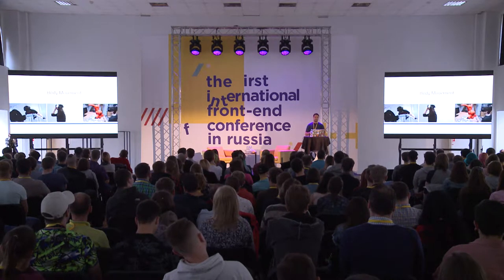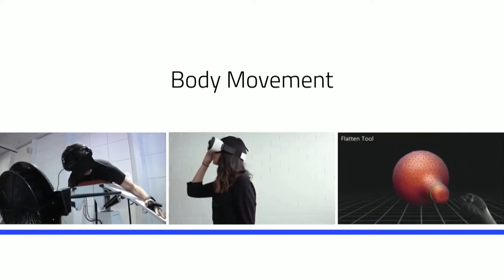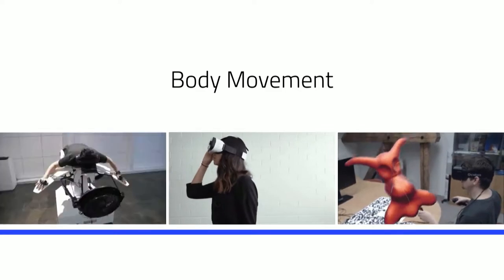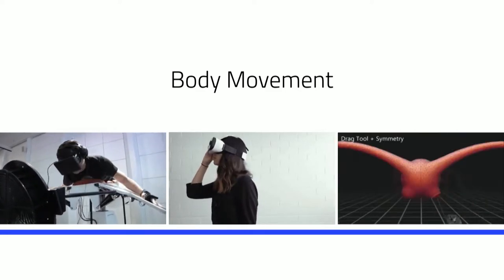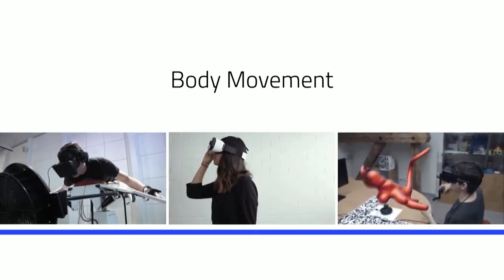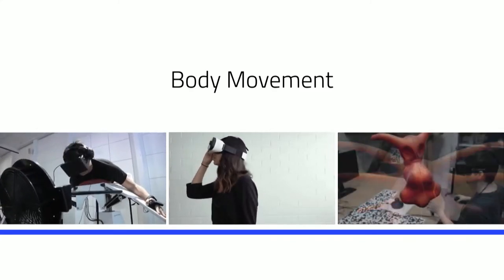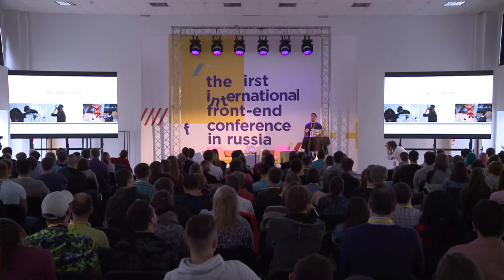Besides stereoscopic imaging, the second thing we need to complete the illusion of virtual space is to track the movement of our body. All VR devices track head movement so we can look around. Some devices — the more expensive ones like HTC Vive or Oculus Rift — track body movement so we can walk around the scene. Of course, the more tracking sensors you have, the better the illusion of reality.